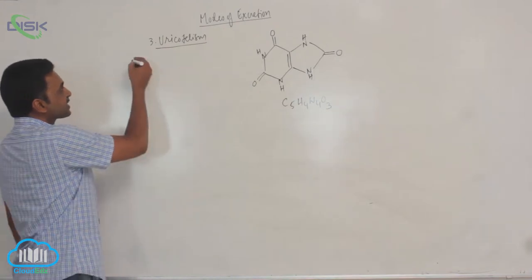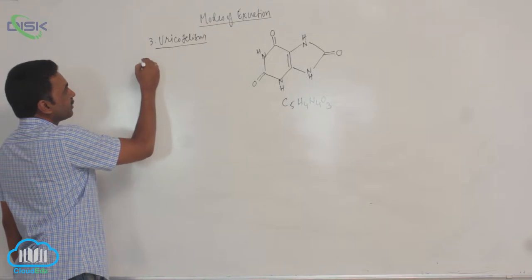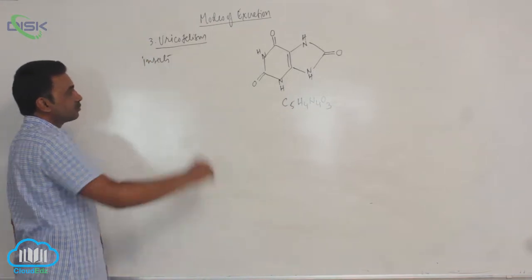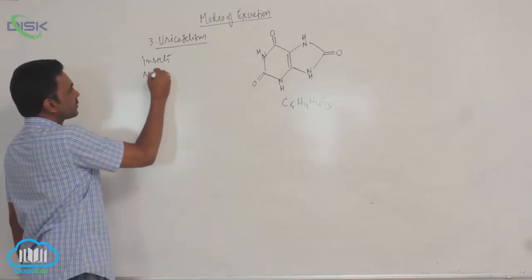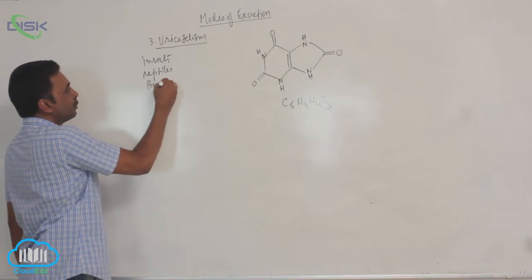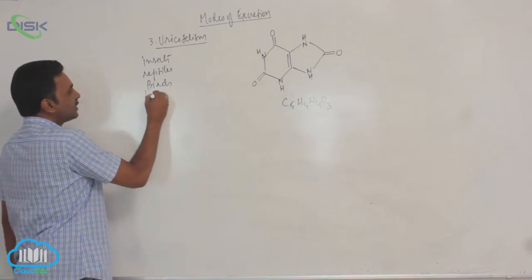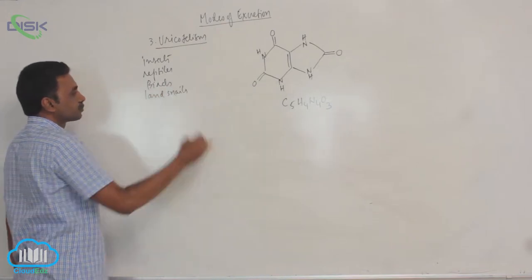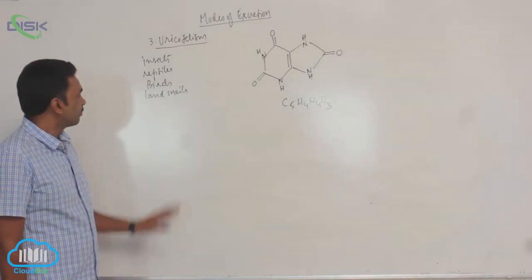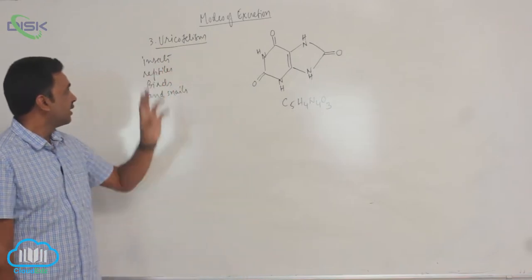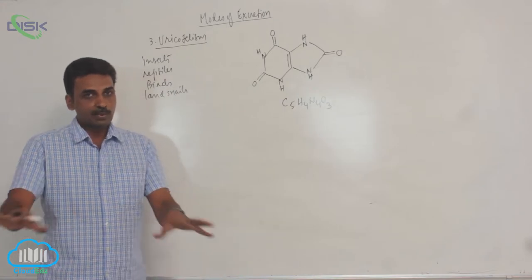Animals which excrete uric acid includes insects, I mean the terrestrial insects, reptiles, the terrestrial reptiles, birds and land snails and certain wood lice like Oniscus. See major groups includes insects, terrestrial insects, insects which are present on land.